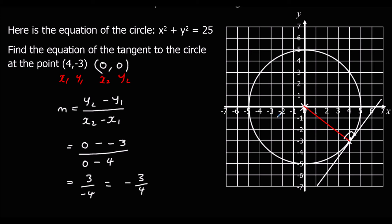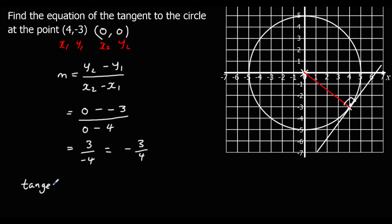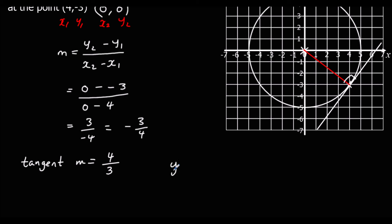So that's the gradient of the radius. For the tangent, the gradient is going to be the negative reciprocal of this. Since -3/4 is negative, the tangent's gradient is going to be positive and flipped over, so 4 thirds. The tangent's got a gradient of 4 thirds, and now we're going to substitute into our equation of a line: y equals mx plus c, so y equals 4 over 3 x plus c.